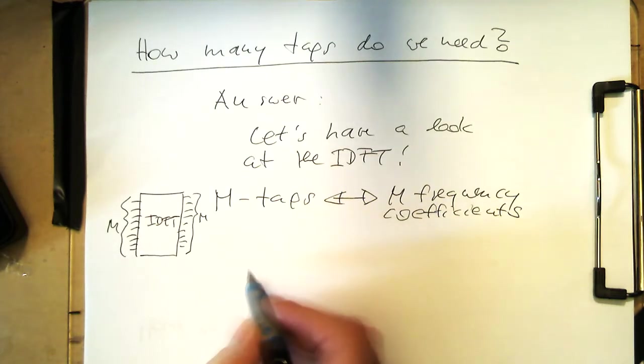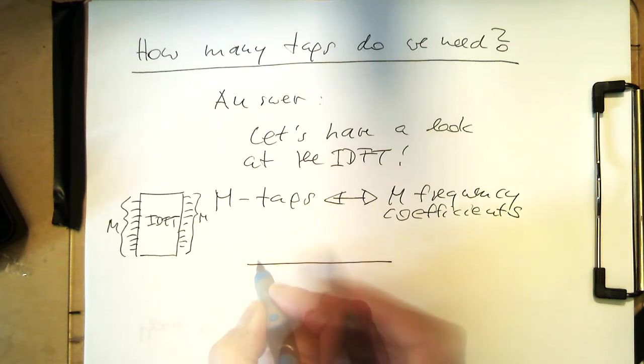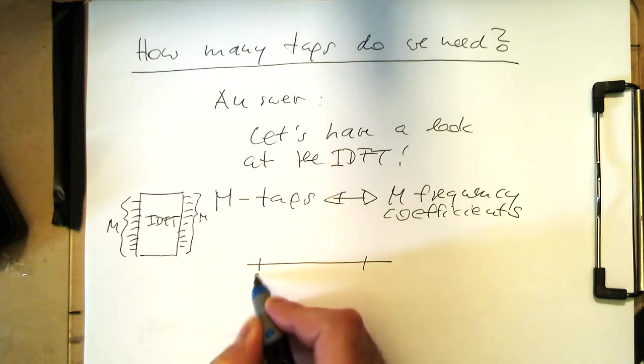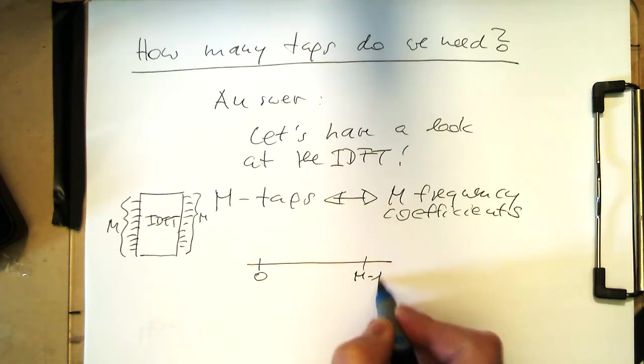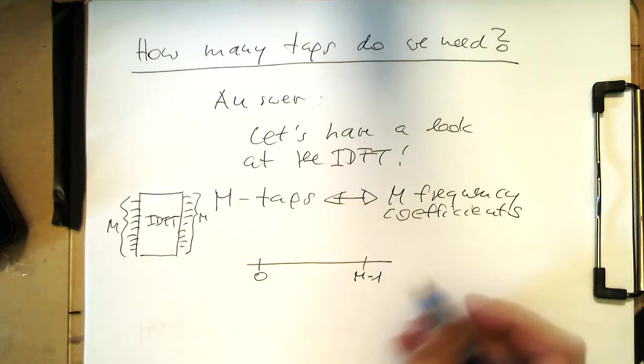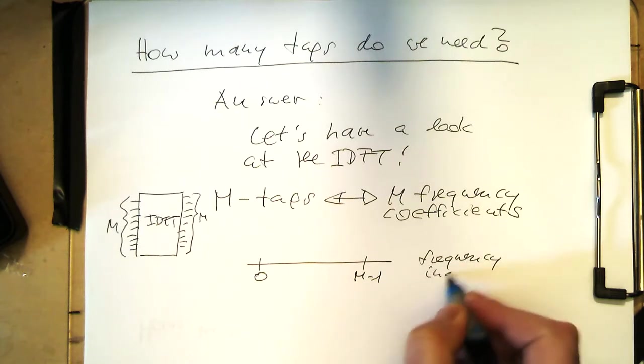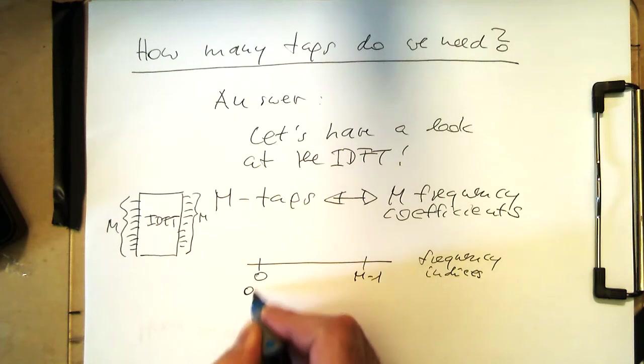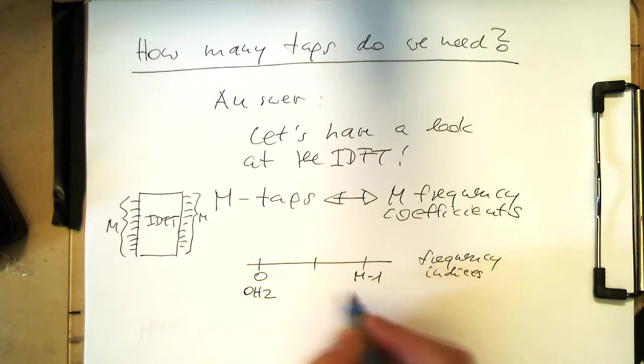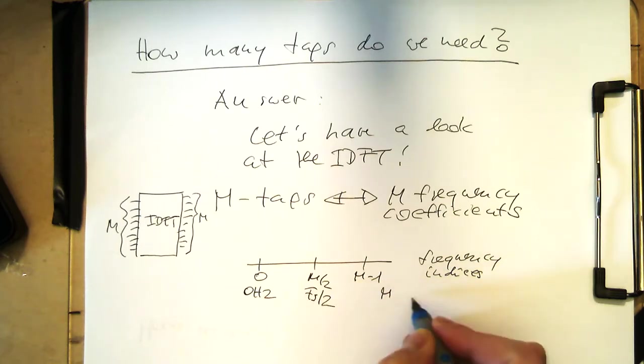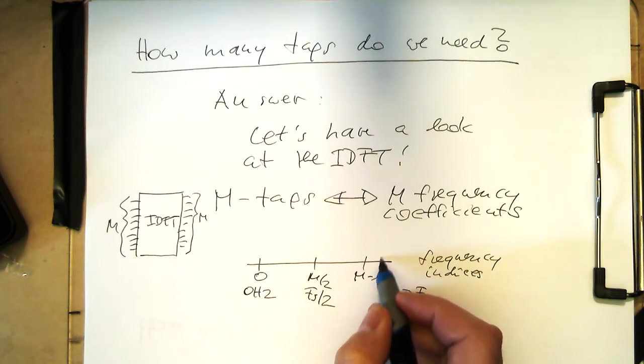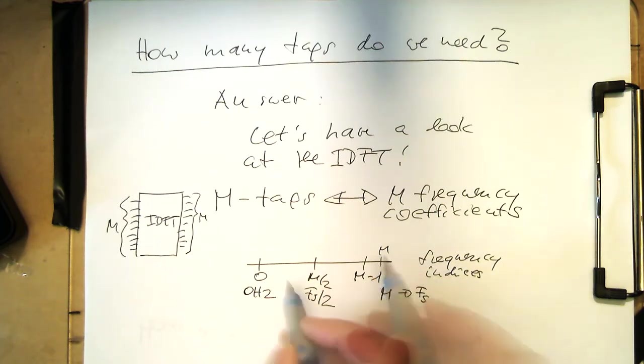And so this means that, if we draw our discrete Fourier spectrum here, that starts from zero and goes to m minus one. So these are our frequency indices here. Then this corresponds here to zero hertz, and the midpoint here, m half corresponds to fs half. And then we know that m corresponds to fs. So therefore, that's linear mapping here, which runs from zero to fs, between zero and m. So m is somewhere here. That's our frequency index here.